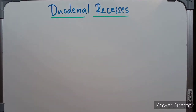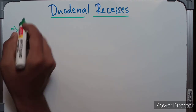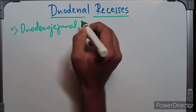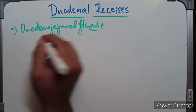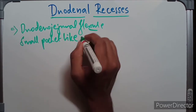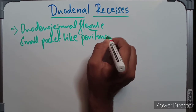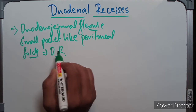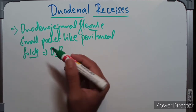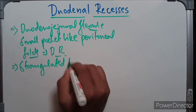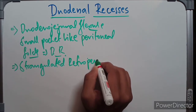Welcome to this video where we discuss the anatomy of the duodenal recesses. In the region of the duodenal jejunal flexure, small pocket-like peritoneal folds are present, known as the duodenal recesses. These are sometimes responsible for the strangulation of retroperitoneal hernias.